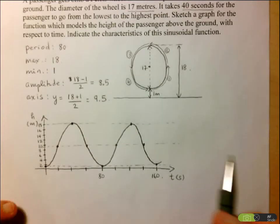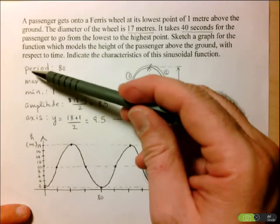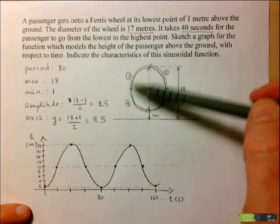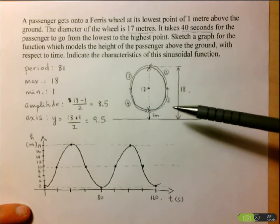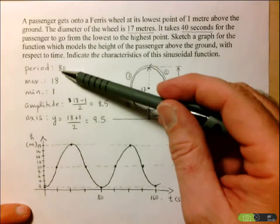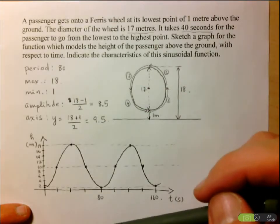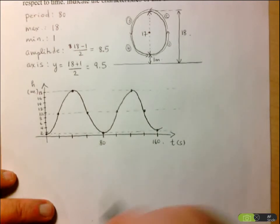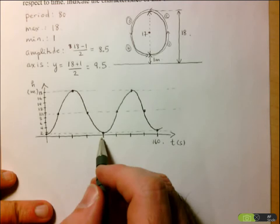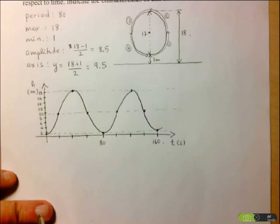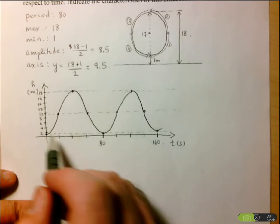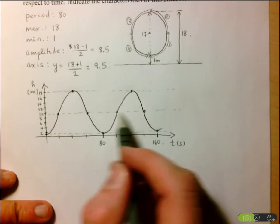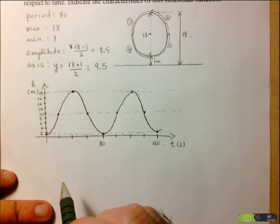So let's just do a recap here. Number one is to list the characteristics that I'm going to use to solve the problem. Number two, if possible, draw a picture of the scenario that's being represented and use it to help you determine the different characteristics that you're looking for. Once you have them, you set up your graph with the correct scale on your x-axis. You're going to split up each period into four equal parts. And for the y-axis, it's a good idea to draw a dotted line across your minimum, your maximum, and your axis so you can plot the points more easily. That's it. Thank you.